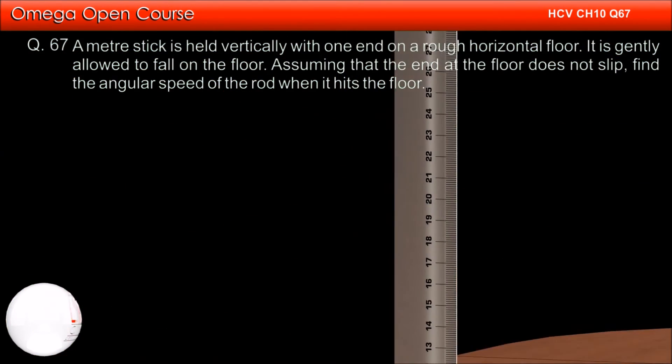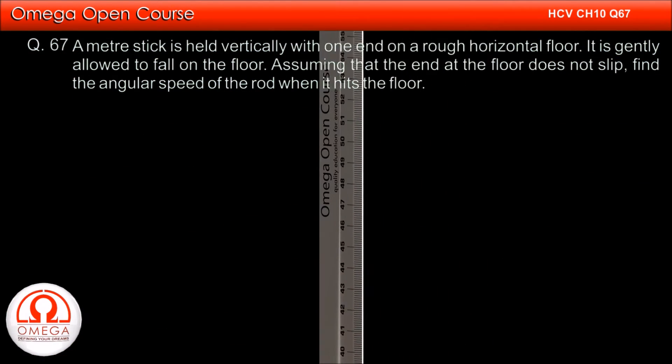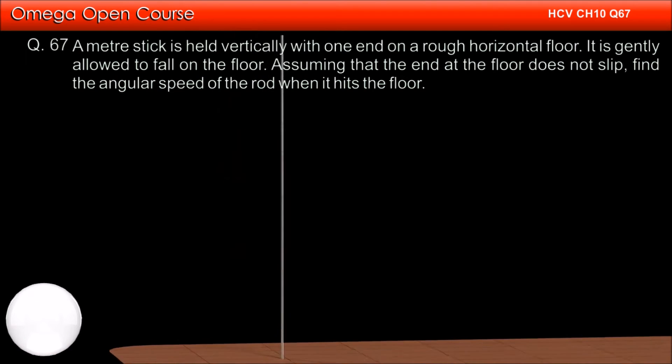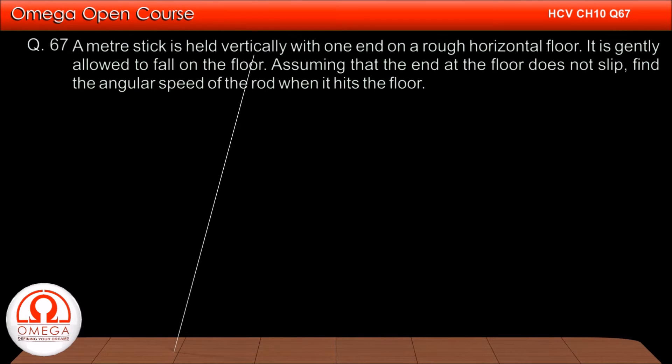A meter stick is held vertically with one end on a rough horizontal floor. It is gently allowed to fall on the floor. Assuming that the end at the floor does not slip, find the angular speed of the rod when it hits the floor.